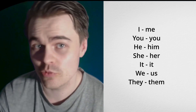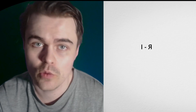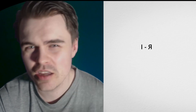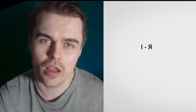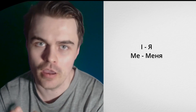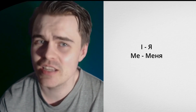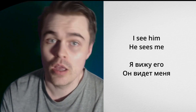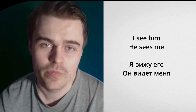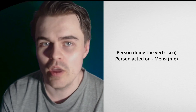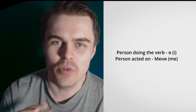We're going to look at the Russian equivalents. I've gone through the ones for 'I' in the previous video when I was explaining the letters. The word for 'I' is ya, and it works similarly to English: I/me becomes ya/minya. For example, 'I see him, he sees me' in Russian would be 'ya vizhu yevo, on vidit minya.' When you're doing the verb it's ya, when you're being acted upon it's minya.